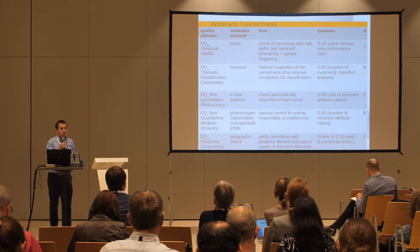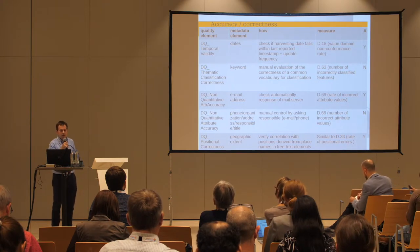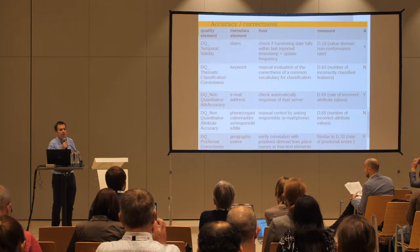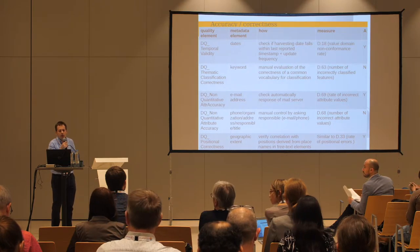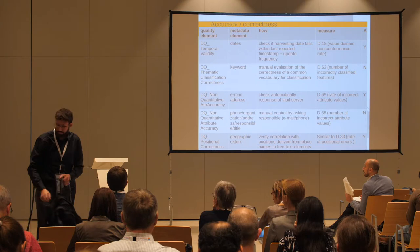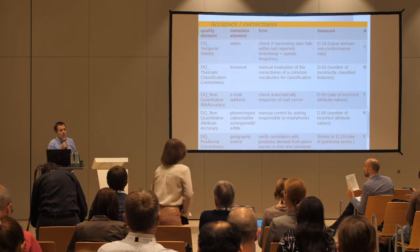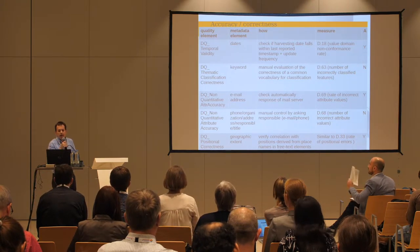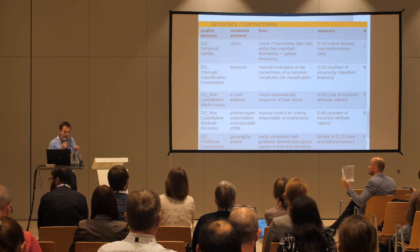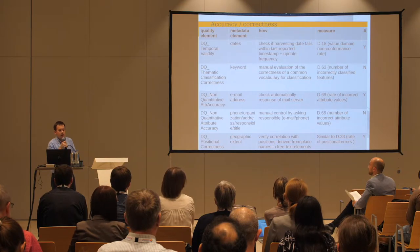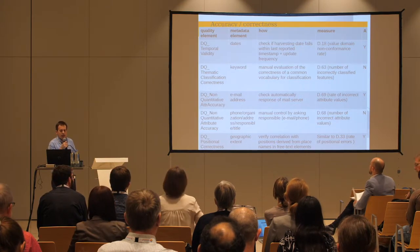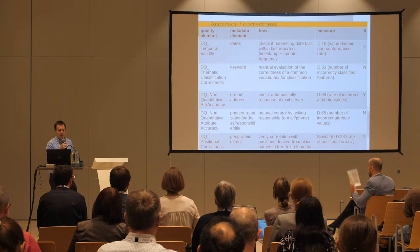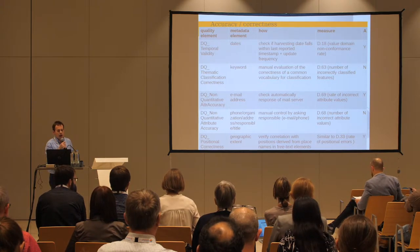About accuracy and correctness, we check several things. For example, with respect to dates, we check if the harvesting date falls within the last reported timestamp for metadata plus the update frequency. We also check thematic classification — we check keywords manually, as there is no other way — and whether the record has been correctly classified. We also check the accuracy of non-quantitative attributes, such as whether email addresses are correct.